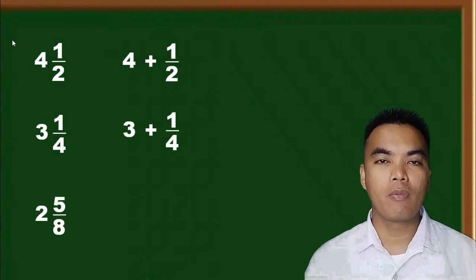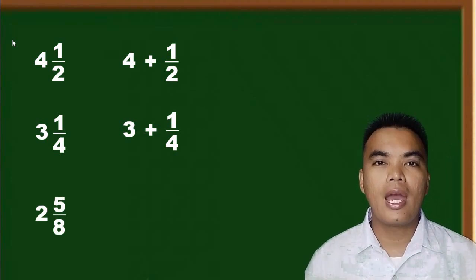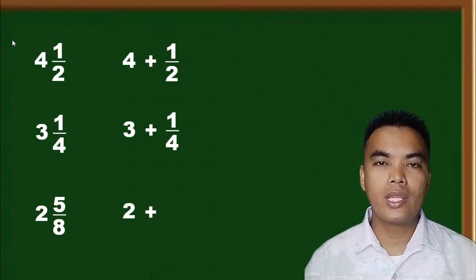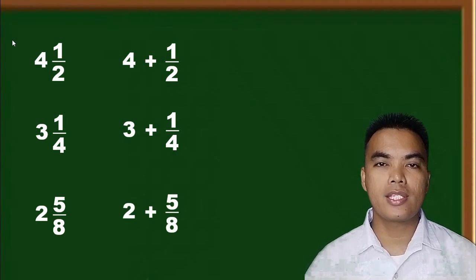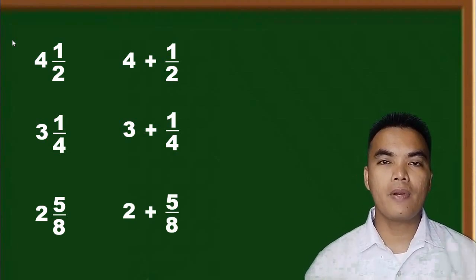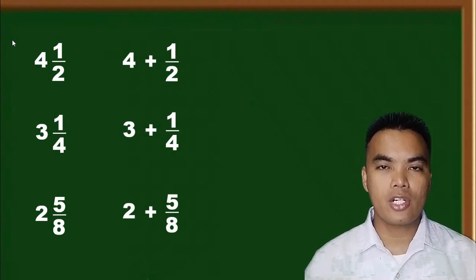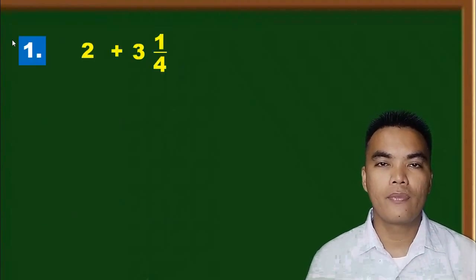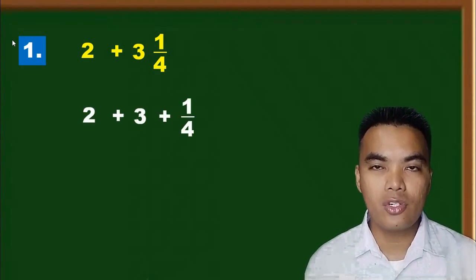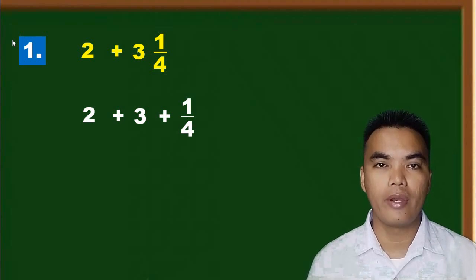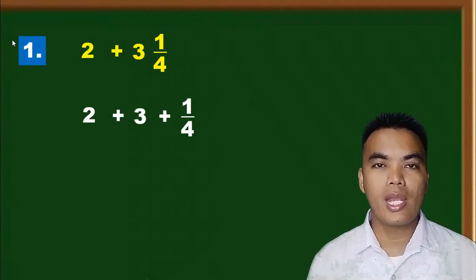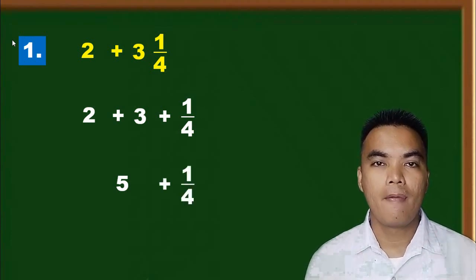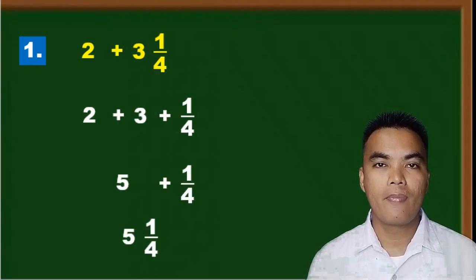Another example is two and five over eight. Adding a whole number with a mixed number is very easy because you just add the whole number separately from the fraction. For example, two plus three and one fourth can be written as two plus three plus one fourth. You add two and three to get five, so the result is five and one fourth.